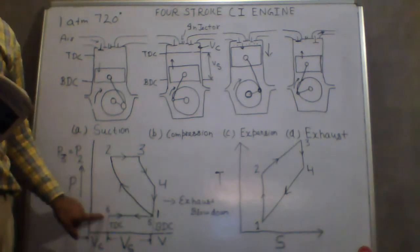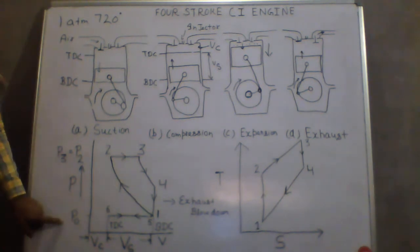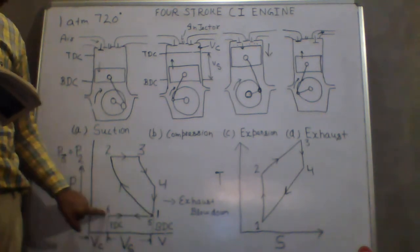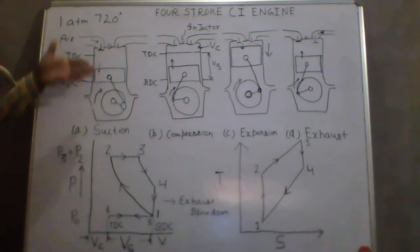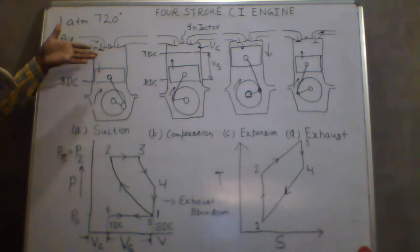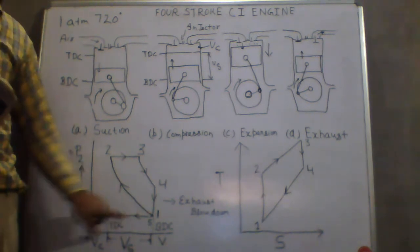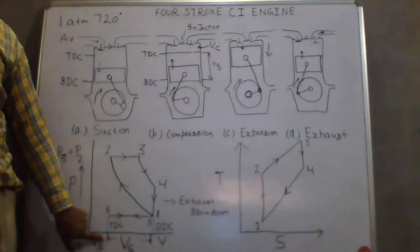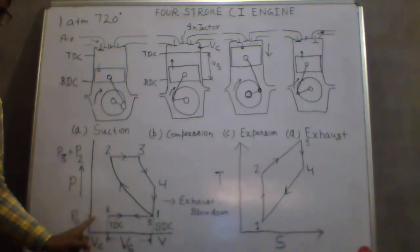On the PV diagram, the first process is 6 to 1: constant pressure intake of air at atmospheric pressure p-naught. The piston moves downward and air comes in at fixed pressure, assuming ideal conditions. From 6 to 1, volume increases from Vc to Vt.